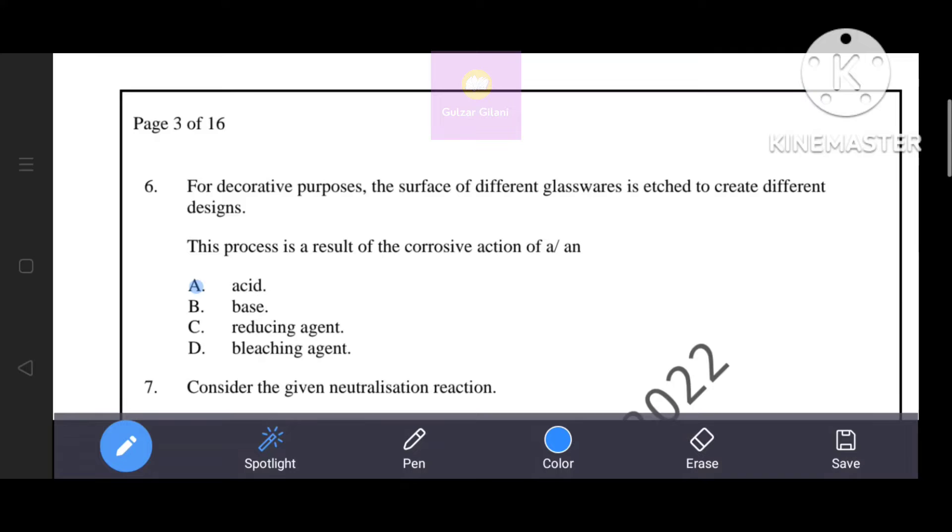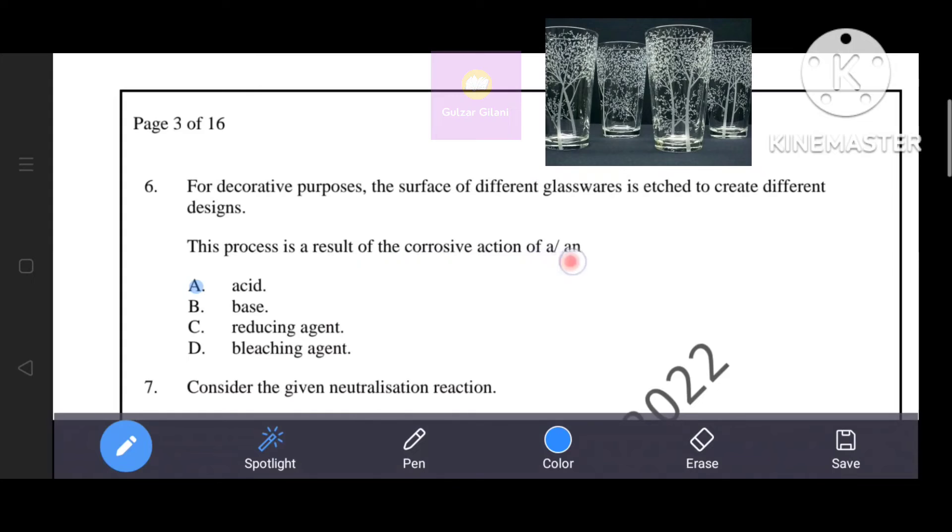Next question. For decorative purposes, the surface of different glassware is etched to create different designs. This process is a result of the corrosive action of... Given options: acid, base, reducing agent, bleaching agent. The correct answer is option A, acid.